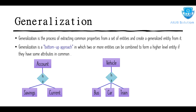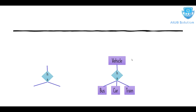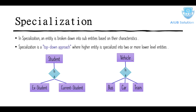So the three entities — bus, car, and train — are combined into the vehicle entity. Generalization is a bottom-up approach where lower-level entities are merged upward into a higher-level entity.